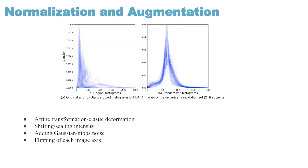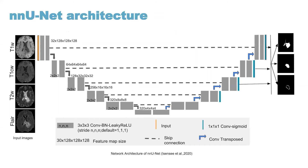Our architecture is built upon the vanilla UNET architecture, which contains encoder and decoder blocks. The encoder extracts features from input images, increasing the number of channels while reducing image resolution. The bottleneck at the bottom contains compressed features from the encoding layers. From the bottleneck, the decoding block upsamples the image resolution and reduces the number of channels. It also concatenates the feature maps from the corresponding encoding layers in all layers of the decoding path.